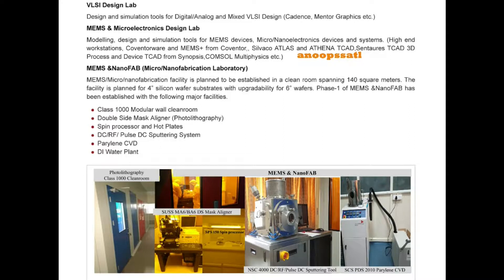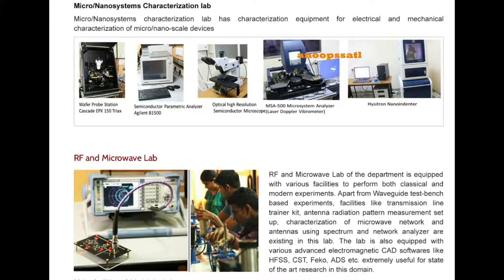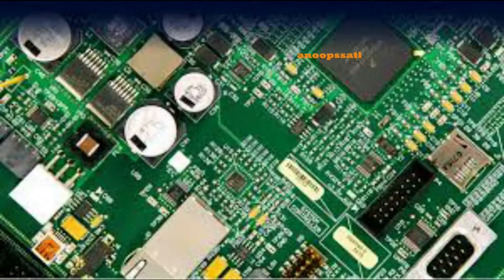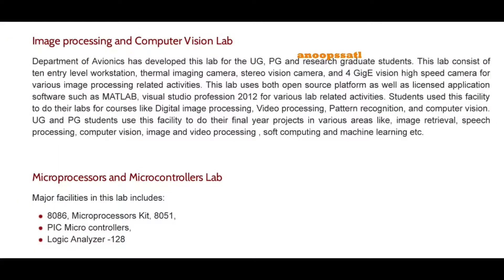Next is RF and microwave — these are communication circuits for radio frequency communications. Communication between earth stations and satellites, and earth stations and rockets, happens through RF. There are many processing implementations done in the RF and microwave engineering lab.